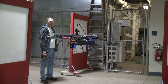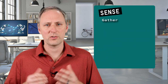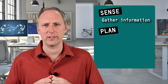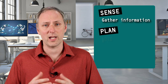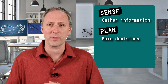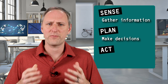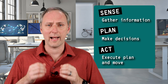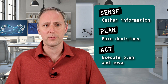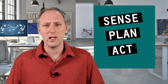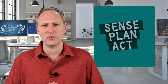In this session we discussed the Sense, Plan, Act framework. Sensing is the process of gathering information about the robot's surroundings. The plan step is the process of making decisions on what and how to perform the next action. And finally the robot performs an action where it executes the plan and moves. You should now be familiar with the Sense, Plan, Act framework and be able to name some examples of each step.